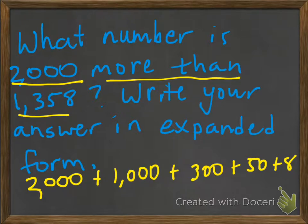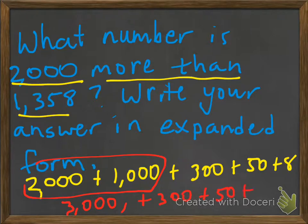Well, the easy thing here now is just to combine these two. So now we would have 3,000 plus 300 plus 50 plus 8.